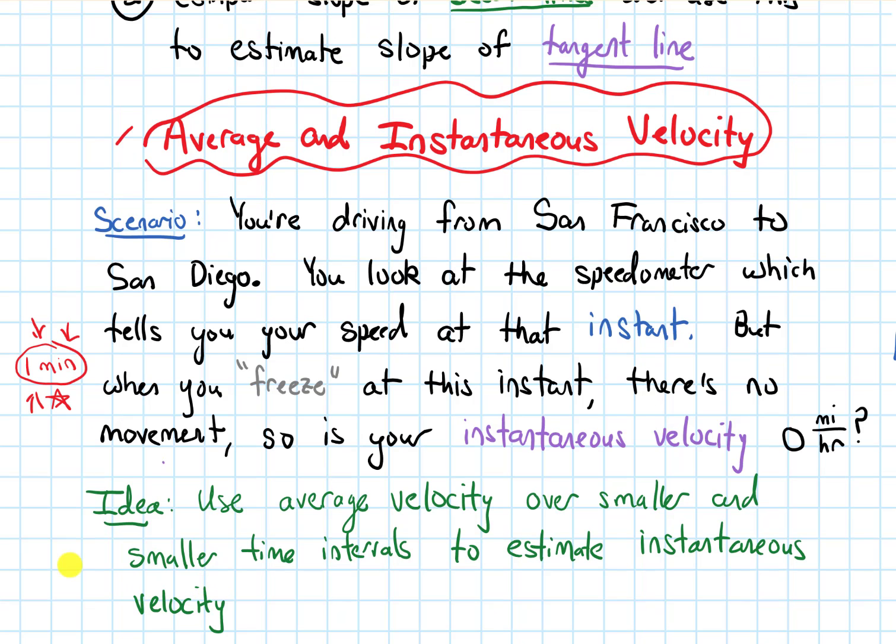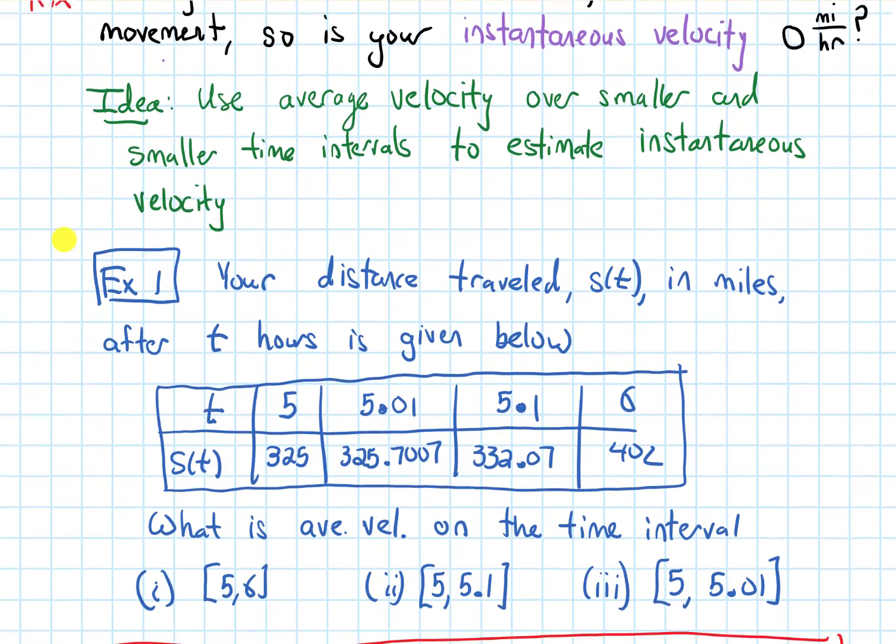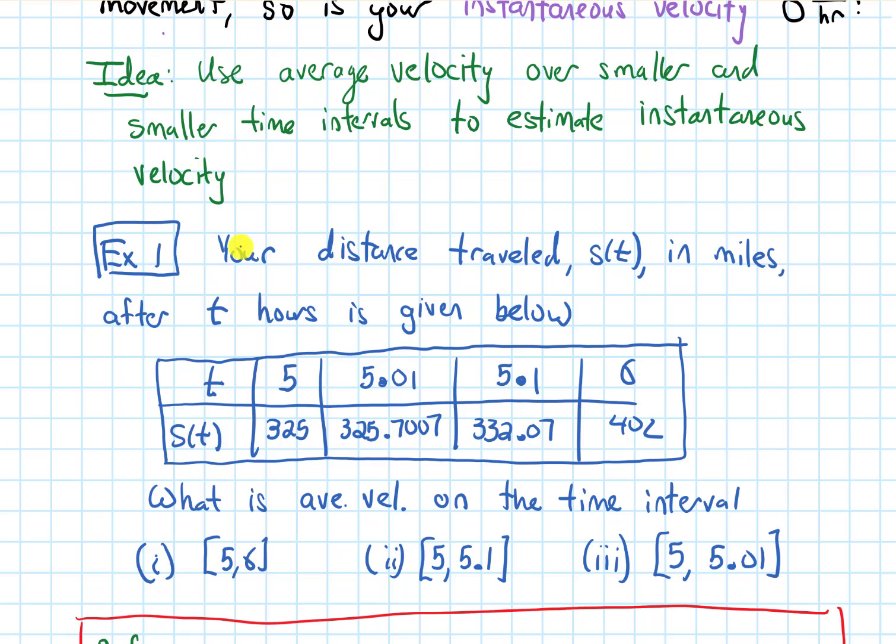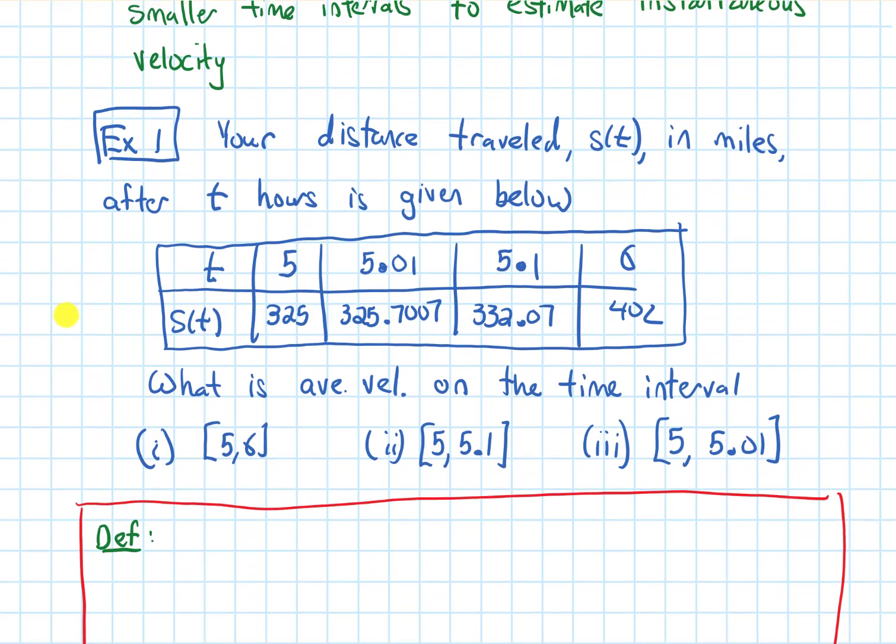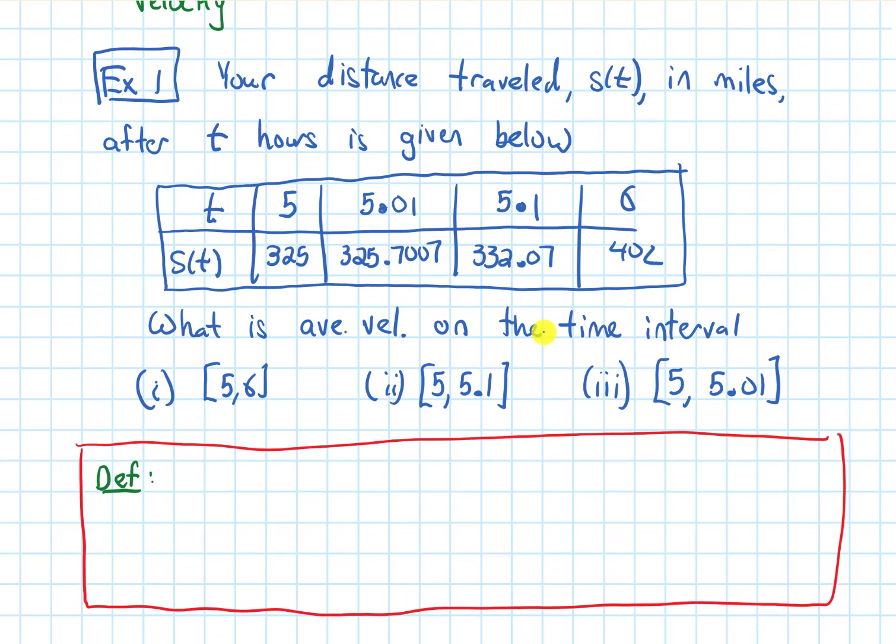All right. So let's apply this idea to an example. So following the setup in that scenario above, the example says that your distance traveled S(t) in miles after t hours is given in the table below. So the top row has different t values like five hours of traveling, six hours of traveling, 5.1 hours of traveling. And then the bottom row keeps track of S(t), how much we've traveled after that amount of time. So we've traveled 325 miles after five hours or 402 miles after six hours of traveling. And then the question asks, what is the average velocity on the following time intervals?